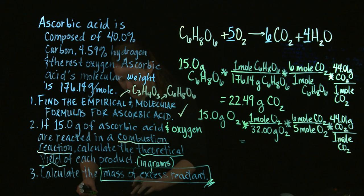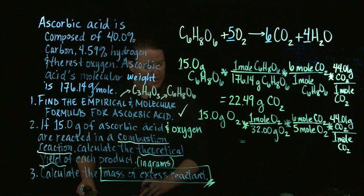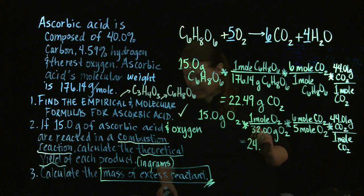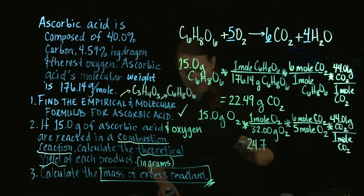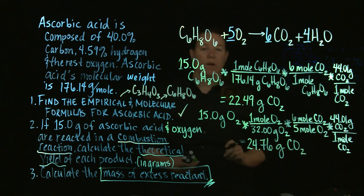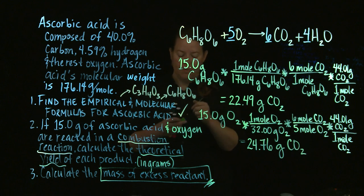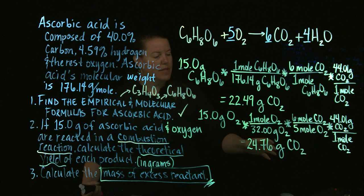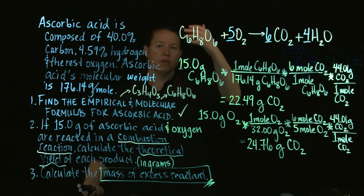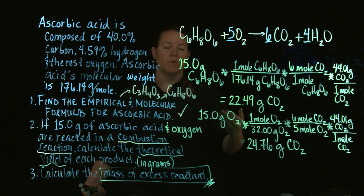44.01 grams of CO2 per 1 mole of CO2. So here I get 15 divided by 32 times 6 times 44.01 divided by 5. 24.76 grams of CO2. Okay, now I can run a comparison here. So now that I have the exact same units of the exact same thing, I can compare what was made by the ascorbic acid versus what was made by the O2.